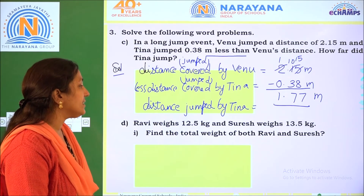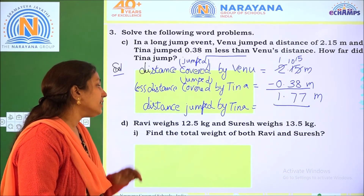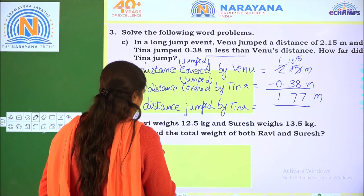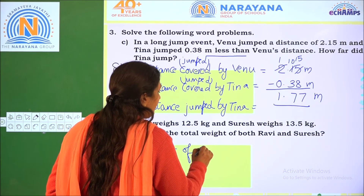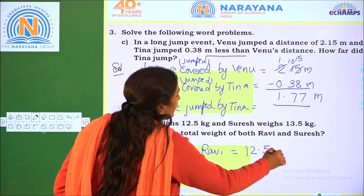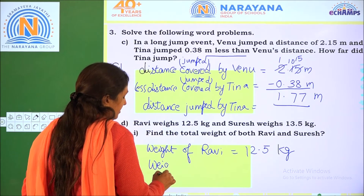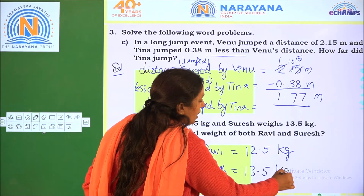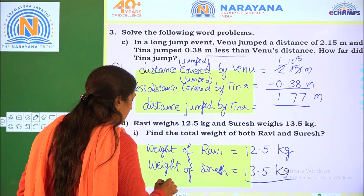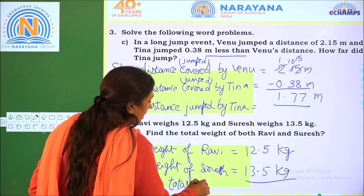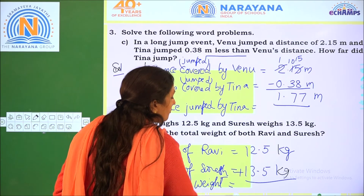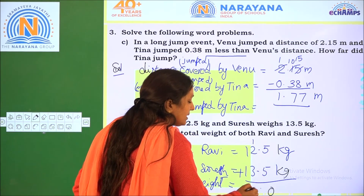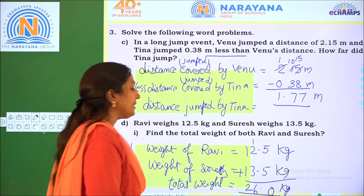Ravi weighs 12.5 kg and Suresh weighs 13.5 kg. Find the total weight of both. Solution: weight of Ravi is 12.5 kg and weight of Suresh is 13.5 kg. To find total weight, we add: 5 plus 5 is 0, carry 1. 1 plus 2 plus 3 is 6. 1 plus 1 is 2. The total weight of Ravi and Suresh together is 26 kg.